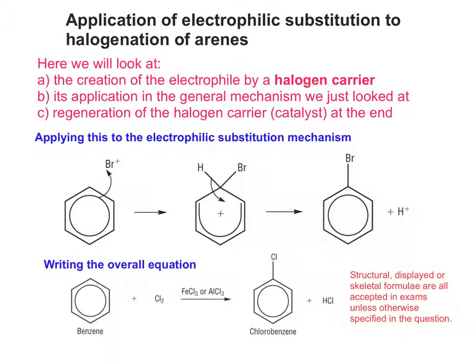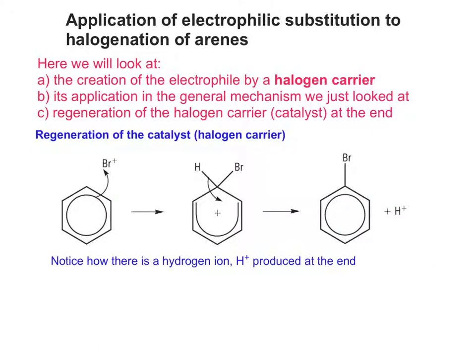We'll look now at how the halogen carrier is regenerated and therefore how it behaves as a catalyst. Looking at the mechanism one more time, you can see a hydrogen ion is produced at the end. If you remember the reaction that created the electrophile, we also produced FeBr4-. The H+ and FeBr4- can react together to regenerate FeBr3. This could equally apply to AlBr3, AlCl3 if chlorinating, or with the halogen changed for iodination.